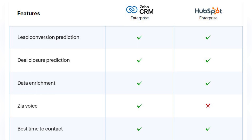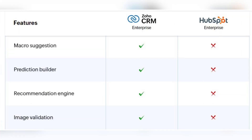Technologies are evolving and we are all using artificial intelligence, so let's talk about different AI functions in Zoho CRM and HubSpot CRM. Both systems provide features such as lead conversion prediction, deal closure prediction, data enrichment and best time to contact. HubSpot also lacks some features such as macro suggestion, prediction builder, recommendation engine and image validation.